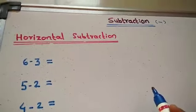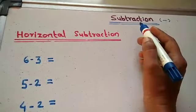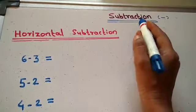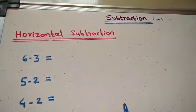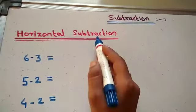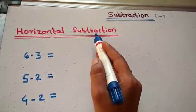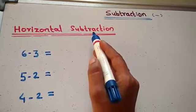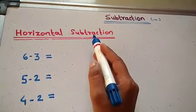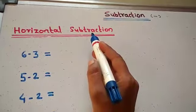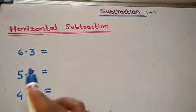There are two types of subtraction: horizontal subtraction and vertical subtraction. Today we will learn horizontal subtraction. Horizontal subtraction means when we arrange numbers in a straight line, in one row.